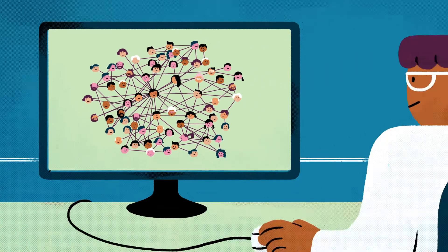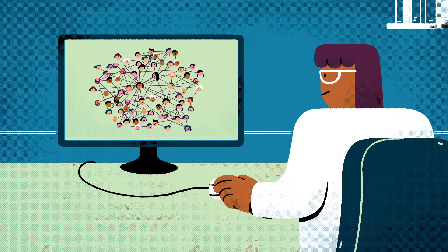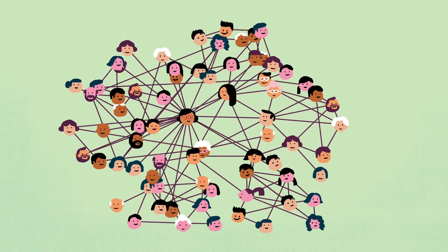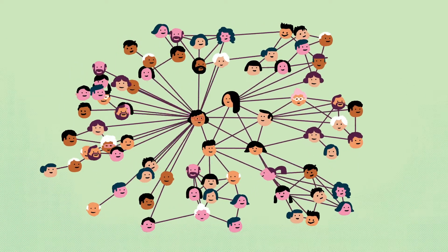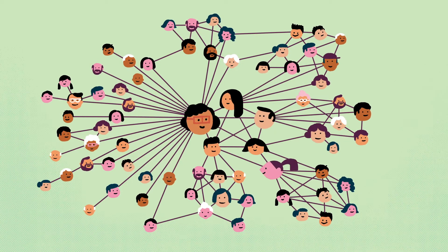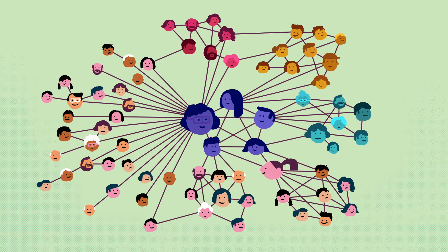However, there are a few tools from network science we can use to make sense of all this information. We can adjust the positioning of the nodes via certain algorithms, and resize the nodes according to how many edges they have. We can also use algorithms to colour-code groups of people who are very tightly connected, to reveal different communities within Amy's life, such as her family, friends and neighbours.